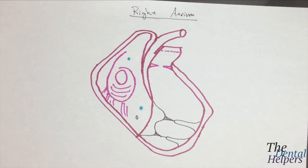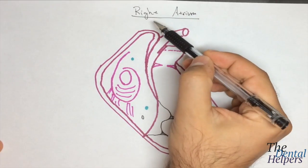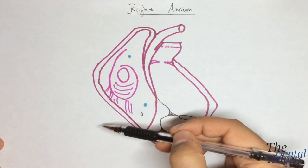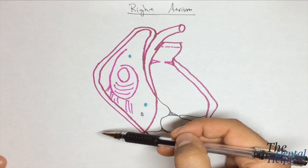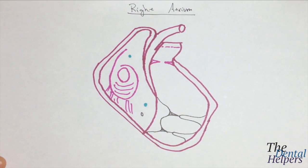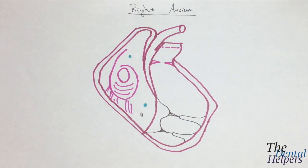So now what we're looking at is the right atrium. As we know, the right atrium is going to receive blood from the superior vena cava as well as the inferior vena cava, and it's going to also pull blood from the coronary sinus as well as the anterior cardiac veins.